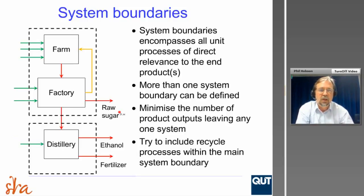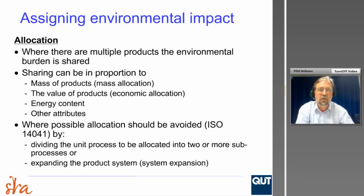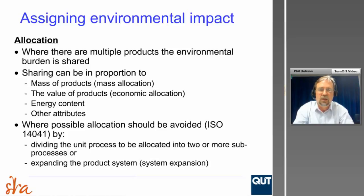You try to include any recycle within the processes — for example, the factory might send mill mud back to the farm, and you want to make sure your boundary encompasses that. Within these boundaries you've determined what the emissions and inputs are, and what you're putting out to the environment. You're producing something at the end of the day, but how do you assign environmental impact to all of your products if you have more than one? This can be done by different methods.